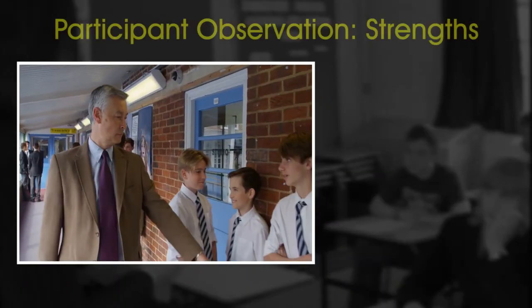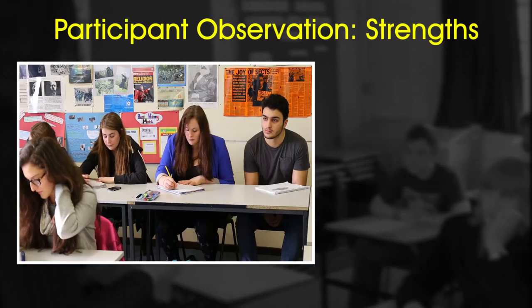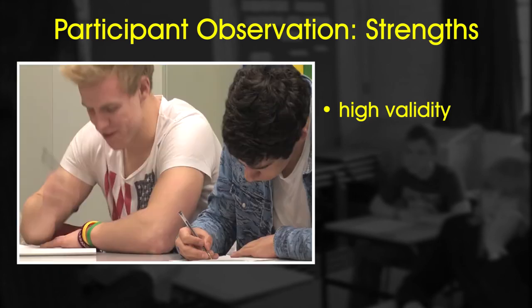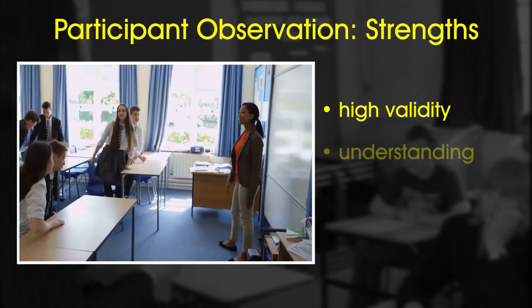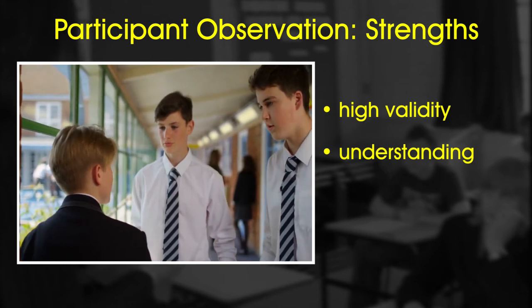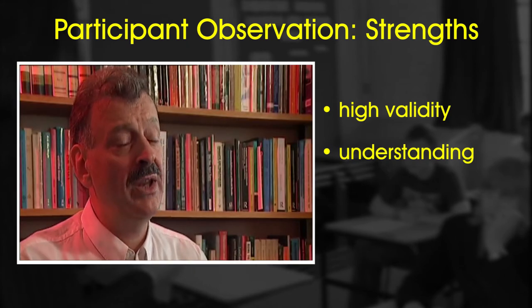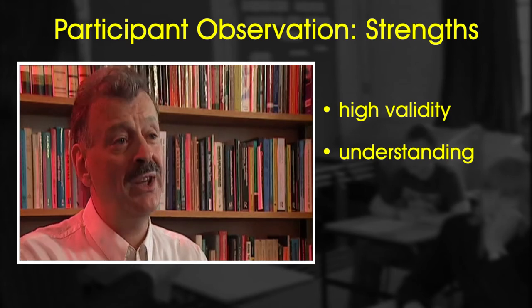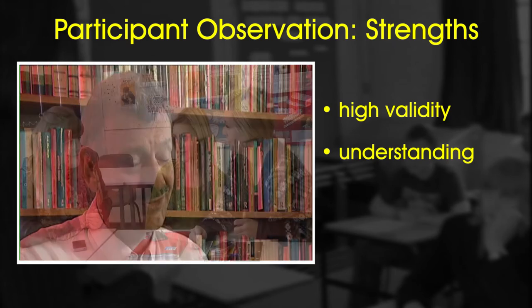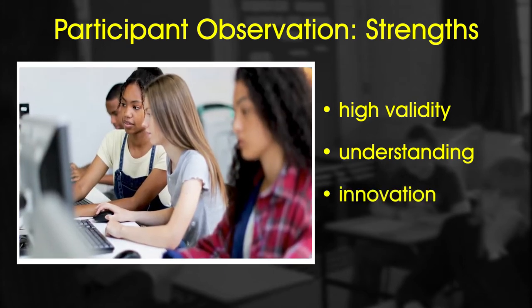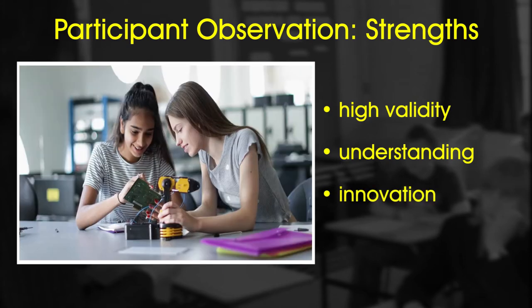So we've looked at what participant observation is and why sociologists use it, but what are its strengths? What does it give sociologists that other methods don't? The great strength of participant observation over other methods is its high validity. Researchers aren't dependent on second-hand accounts – they're actually there, seeing for themselves. This gives us a better understanding of the meanings behind people's actions, with direct human contact and interaction. And participant observation provides innovation: new questions which can be picked up and explored in further research.